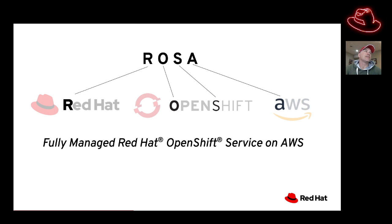Welcome to a quick getting started overview on ROSA, otherwise known as Red Hat OpenShift on AWS. This is a fully managed service of Red Hat OpenShift on AWS.